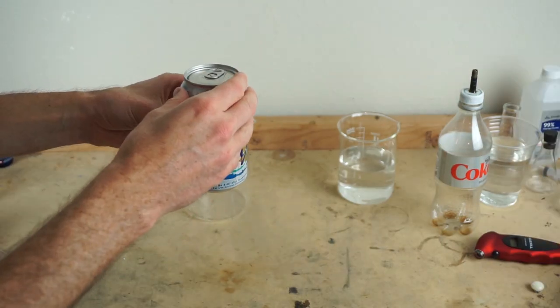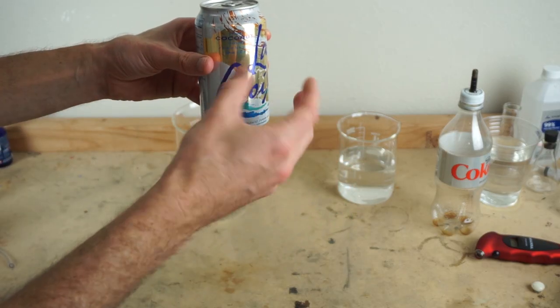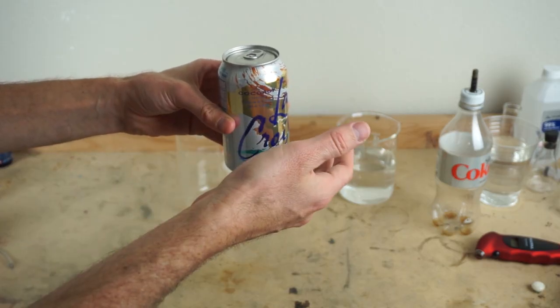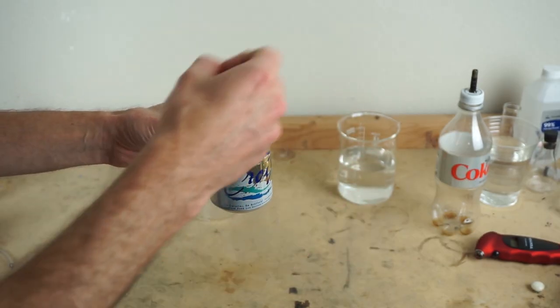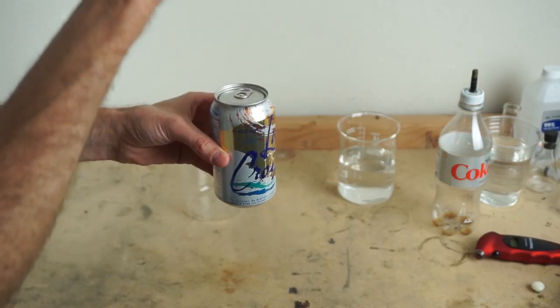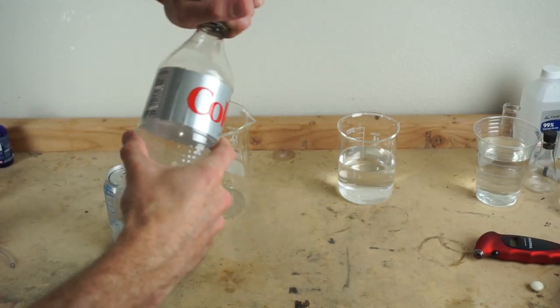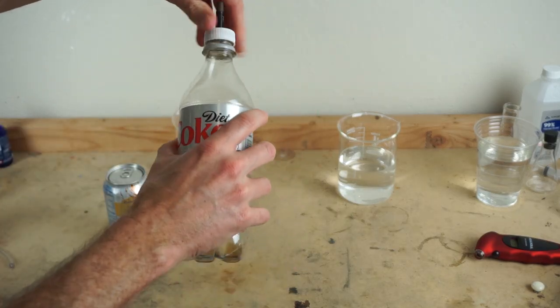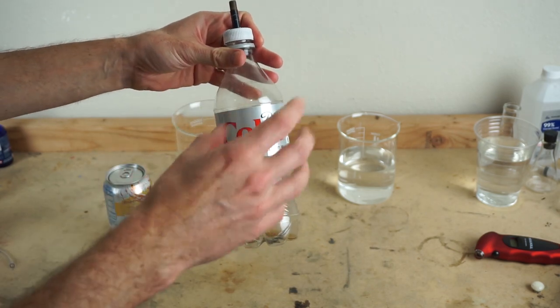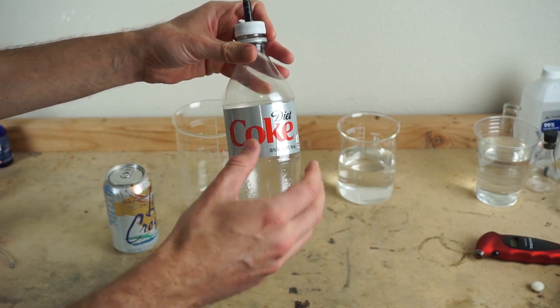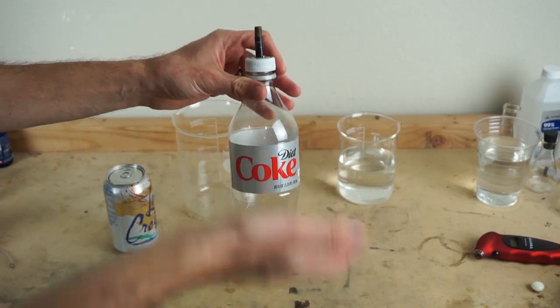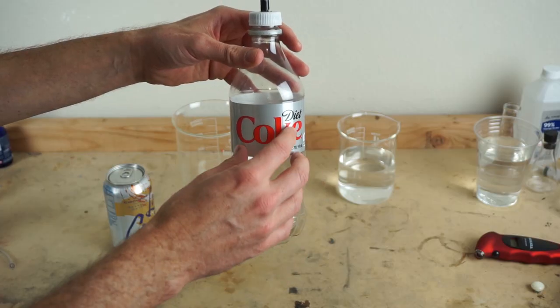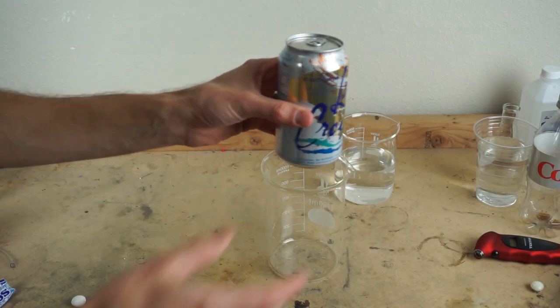But when you open the soda, you reduce that pressure. So now the liquid that did have the CO2, it says, oh wait, we're not at a high pressure anymore. So it starts pushing that CO2 back out of the liquid, and so it dissolves out of the liquid back into the gas phase. So that's the reason why when you open a soda bottle, you hear the pressure release, and then when you close it back up, the bottle will actually re-pressurize. And that's because the CO2 that was dissolved in the liquid keeps releasing that CO2 from the liquid until it gets back to about the same pressure that it was before you open the bottle.